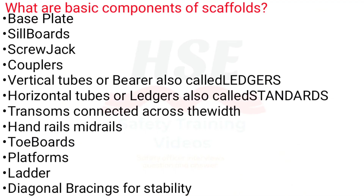What are the basic components of scaffolds? Base plate, sill boards, screw jack, couplers, vertical tubes or standards, horizontal tubes or ledgers, transoms connected across the ledgers, handrails and mid rails, toe boards, platforms, ladders, and diagonal bracings for stability.